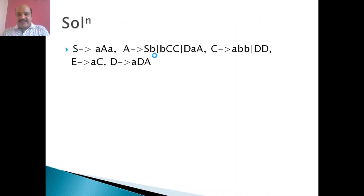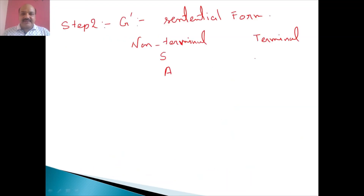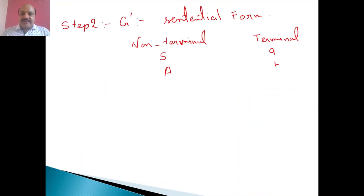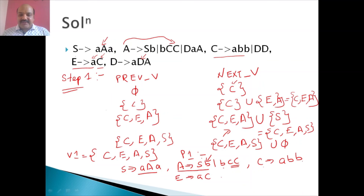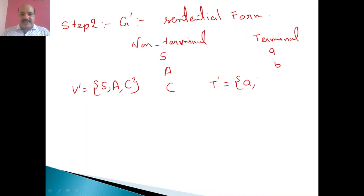Starting with S, we can see the production S directly derives the terminal symbol 'a' and variable A. So we have {a, A}. Next, A is deriving b and C. So again we add those symbols. Next, C is deriving abb, but E is not reachable in any derivation. So V prime will be {S, A, C} and T prime will be {a, b}.